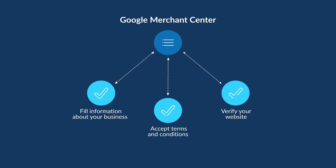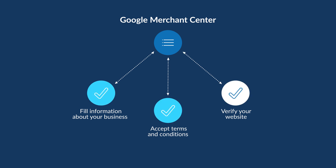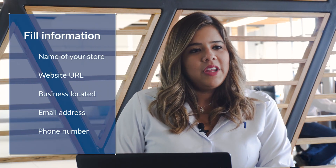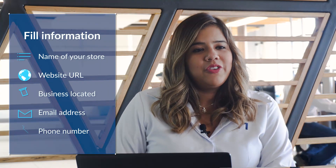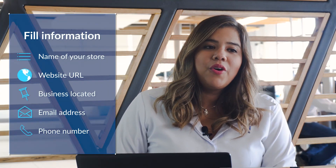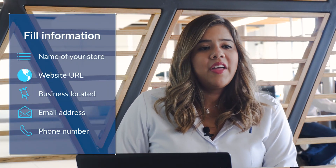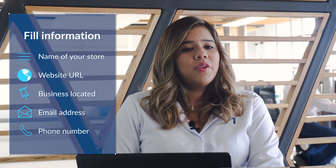You will need to do three things: fill in your information about your business, accept terms and conditions, and website verification. In the business information section you will need to include information like the name of your store, your website URL, and where your business is located.